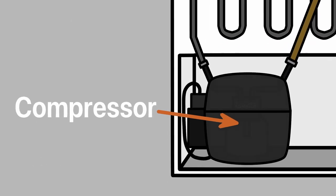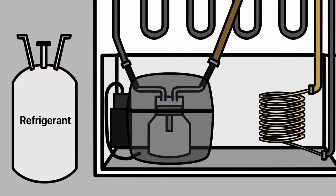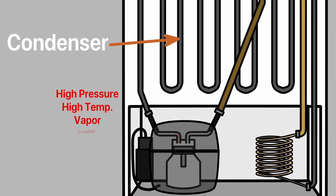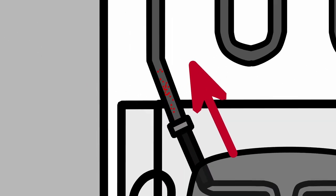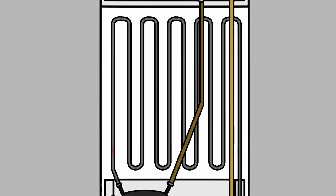First, the compressor compresses the vapor refrigerant inside the compression chamber. As pressure increases, the temperature increases. The high-pressure, high-temperature vapor refrigerant will leave the compressor and enter the condenser through the connecting pipe.